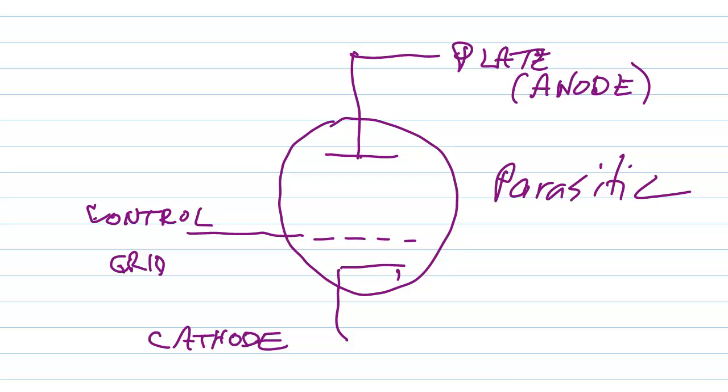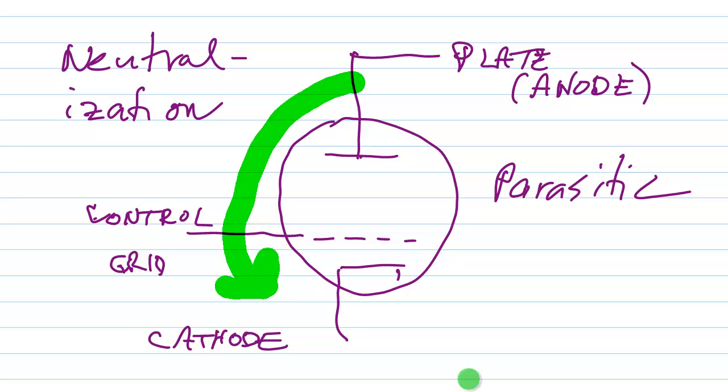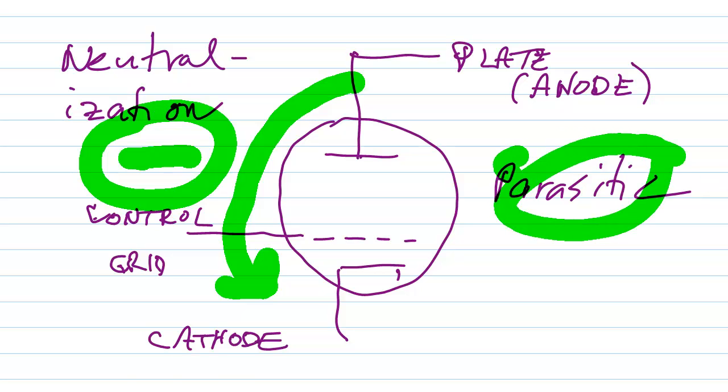Now there are methods to minimize the risk of parasitic oscillation. One of these methods is called neutralization in which a certain amount of negative feedback is deliberately introduced from the plate circuit or output to the grid cathode circuit or input. Negative feedback tends to reduce the gain of the amplifier just a little bit but it also greatly minimizes the risk of parasitics taking place.